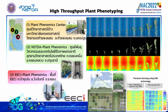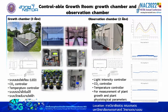The 3rd plan is EECI, which is the plan for the EECI plant phenomics. The 2nd plan is the Controllable Growth Chamber, also called the Growth Chamber and Observation Chamber. This plan is used to control the carbon dioxide in the growth chamber.